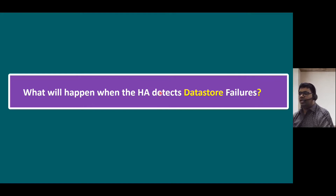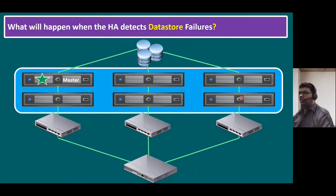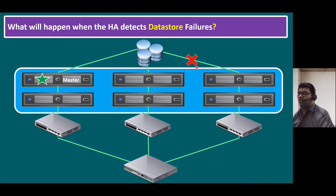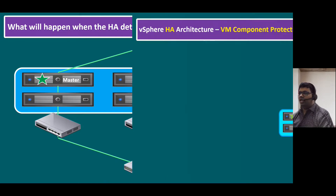What will happen when HA detects data store failures? Until now we talked about two scenarios — host failure and network failure. Now, the third key scenario is data store failures. Within the data store failure, we should concentrate on the data store level. There is a scenario where data store connections may also become disconnected from our network — like HBA storage devices, HBA card, iSCSI HBA card, or network-attached storage connections may be lost. This can be predictable when we are using a vSphere infrastructure in our organization, so this is also one possibility we need to address.